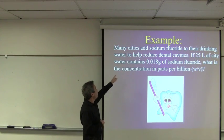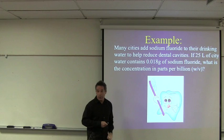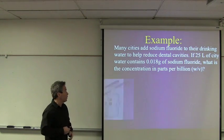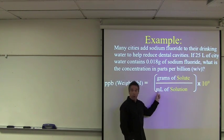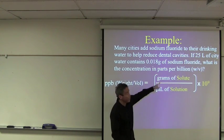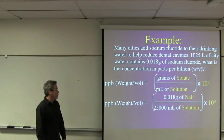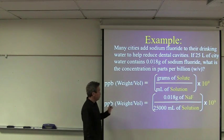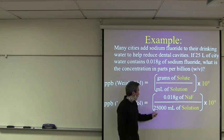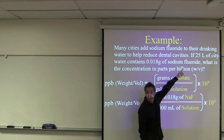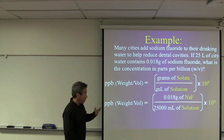If 25 liters of city water contains 0.18 grams of sodium fluoride, what's the concentration in parts per billion, weight to volume? So let's do the calculation. Here's our definition of parts per billion. Grams of solute over milliliters of solution. So I have to convert liters to milliliters. Times 10 to the 9th. So I'll put those numbers in. 0.018 grams of sodium fluoride. 25,000 milliliters of solution. That's 25 liters. Times, on your calculator, do times 1 times 10 to the 9th.